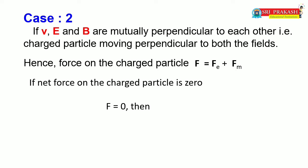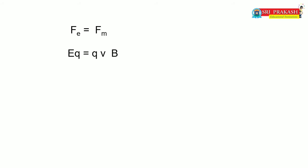If the net force on the charged particle is zero — for example, electric force acting in one direction and magnetic force acting in the opposite direction and both are equal — then net force is zero. If F = 0, we can equate: EQ = BQV·sin θ. Since θ = 90°, sin 90° = 1, so EQ = BQV. The Q's cancel, giving us V = E/B.